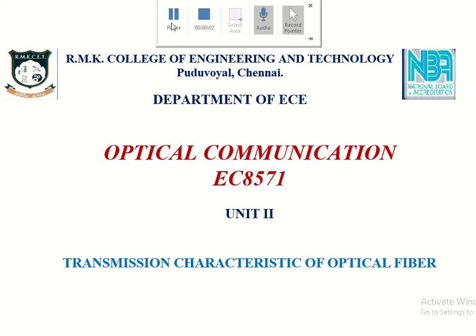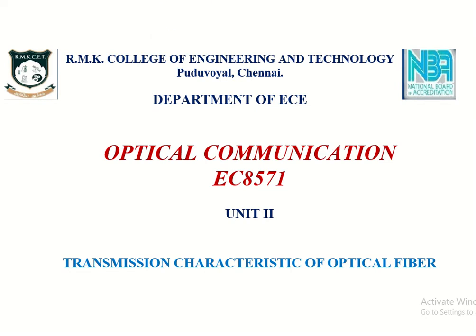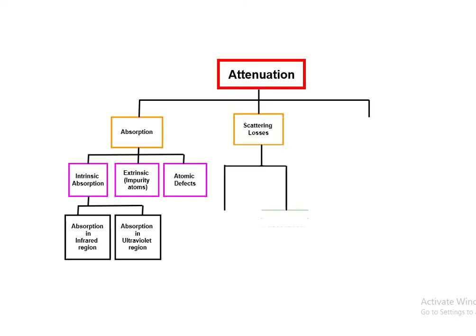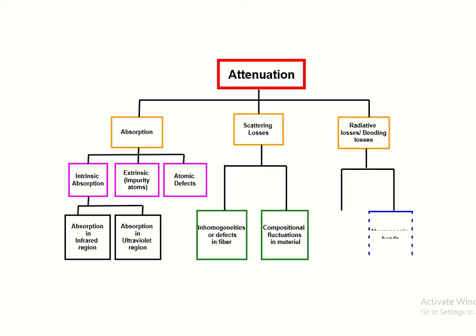Welcome to the class on optical communication, Unit 2: Transmission Characteristics of Optical Fiber. We have already seen the introduction about attenuation and the three basic mechanisms: first is absorption, second is scattering loss, and third is bending loss, also called radiative loss.